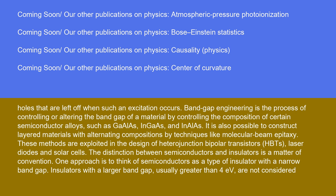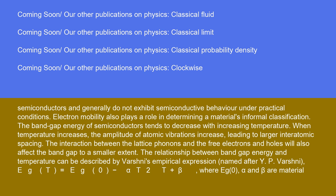The distinction between semiconductors and insulators is a matter of convention. One approach is to think of semiconductors as a type of insulator with a narrow band gap. Insulators with a larger band gap, usually greater than 4 eV, are not considered semiconductors and generally do not exhibit semiconductor behavior under practical conditions. Electron mobility also plays a role in determining a material's informal classification. The band gap energy of semiconductors tends to decrease with increasing temperature. When temperature increases, the amplitude of atomic vibrations increase, leading to larger intra-atomic spacing. The interaction between the lattice phonons and the free electrons and holes will also affect the band gap to a smaller extent.